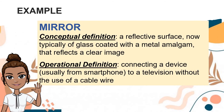'Mirror.' Conceptual definition: a reflective surface, now typically of glass coated with a metal amalgam, that reflects a clear image. Operational definition: connecting a device, usually from a smartphone to a television, without the use of a cable wire.